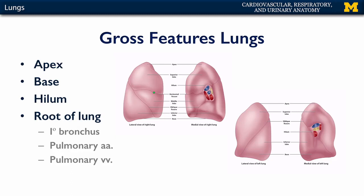The lung also has an apex. The apex fits into the cupula of the thoracic space. There's also a diaphragmatic surface, or a base, to the lung, and when viewed medially, there's a hilum.